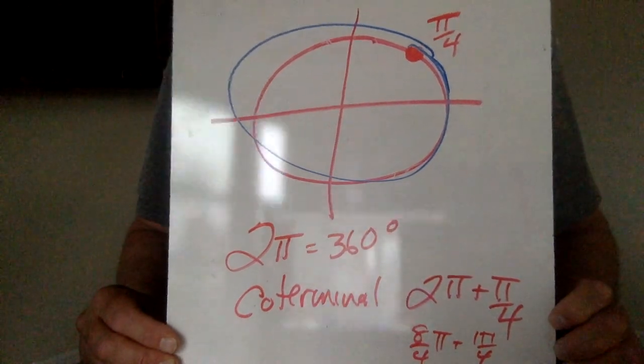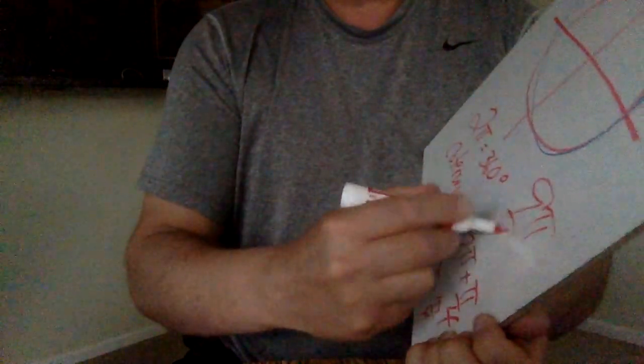Pi over 4, 1 pi over 4. And that would be 9 pi over 4, which is not written on this sheet. 9 pi over 4.